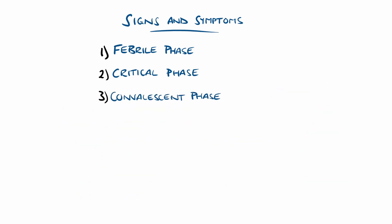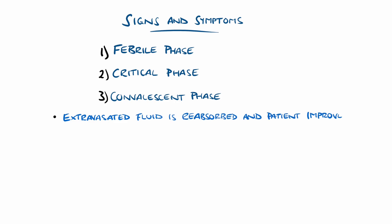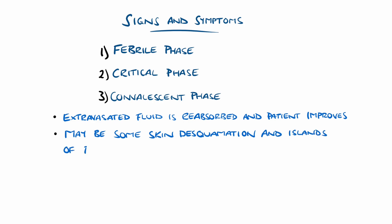The third phase is the convalescent phase, where the extravasated fluid is resorbed and the patient improves. There may be skin desquamation or peeling, and the flushing rash may improve, leaving islands of normal, paler skin.